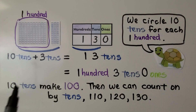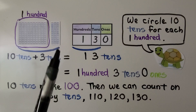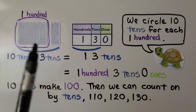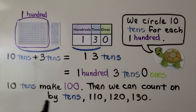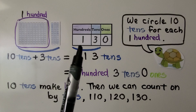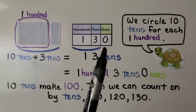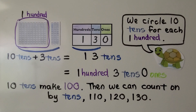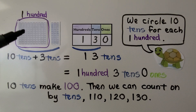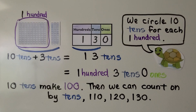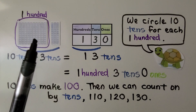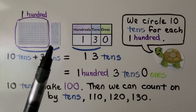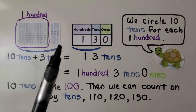Here we have 10 tens and three tens — that's 13 tens. 13 tens is 100, three tens, and zero ones. We can circle the ten tens for each hundred. Ten tens makes 100, then we can count on by tens: one hundred, one hundred ten, one hundred twenty, one hundred thirty.